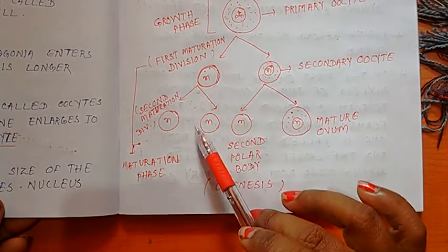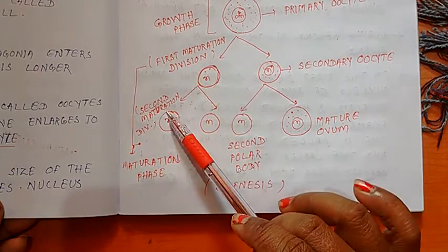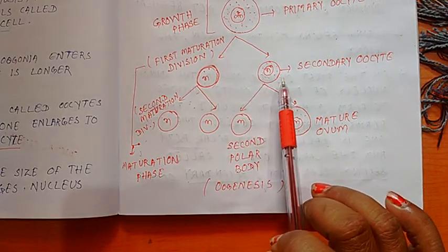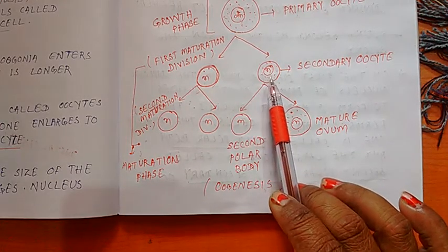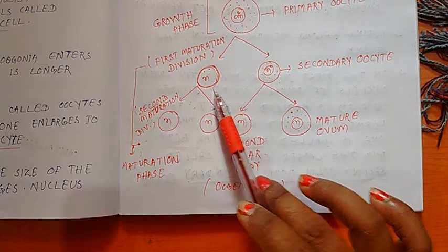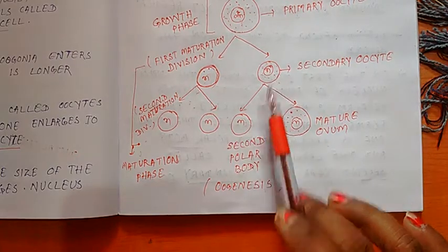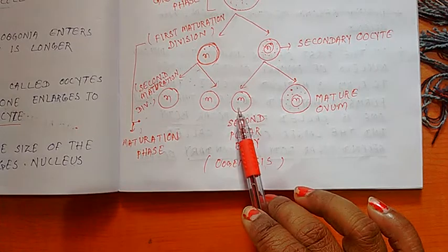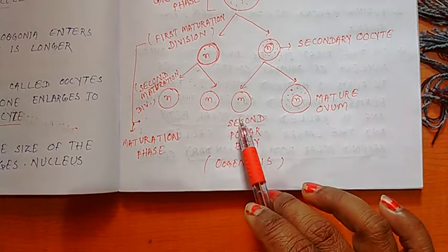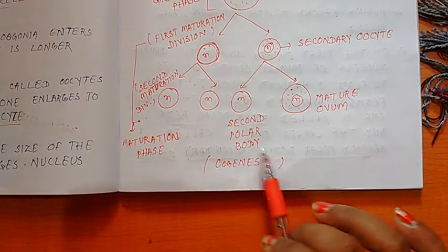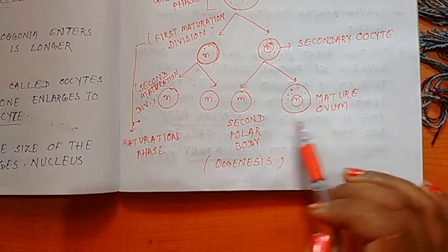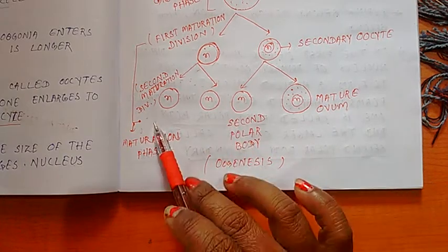The primary oocyte then enters into the last phase, that is the maturation phase. The maturation phase consists of two divisions: the first maturation division and the second maturation division. The first maturation division is unequal, forming a larger and a smaller cell. The larger one is called the secondary oocyte and the smaller one is called the polar body. The secondary oocyte then undergoes the second division to form a mature ovum and another smaller cell called the second polar body. In the maturation phase, the diploid primary oocyte forms a haploid mature ovum and polar bodies.